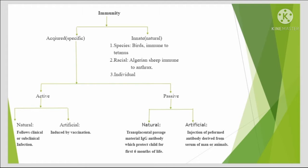Passive immunity is divided into two types: natural and artificial. Natural passive acquired immunity involves the transplacental passage of maternal IgG antibody, which protects the child for the first six months of life. Artificial passive acquired immunity involves injection of preformed antibody derived from the serum of a man or animal host.